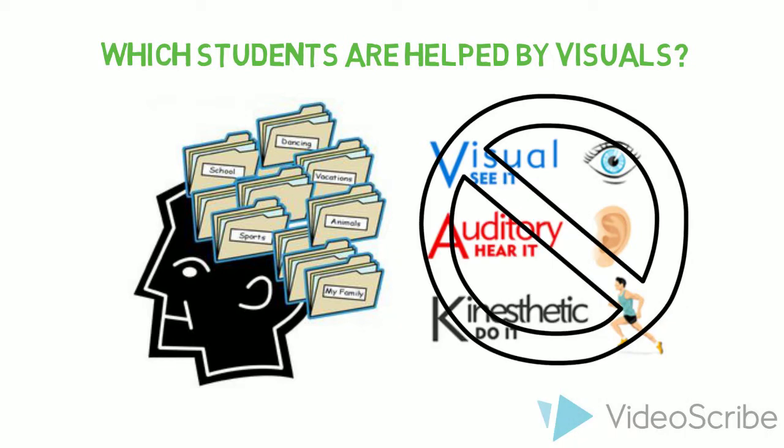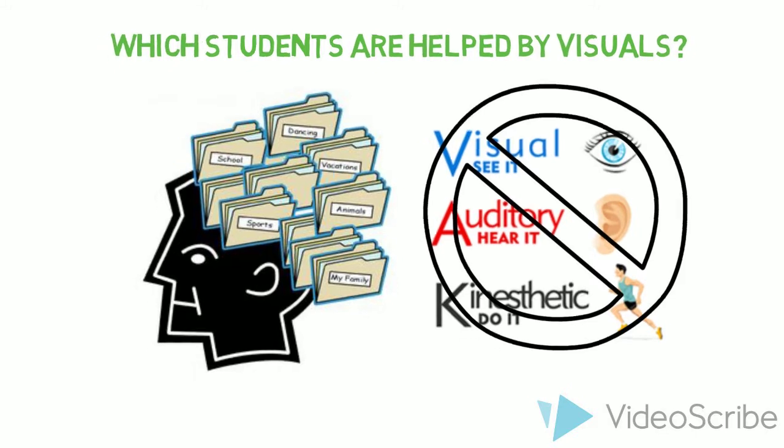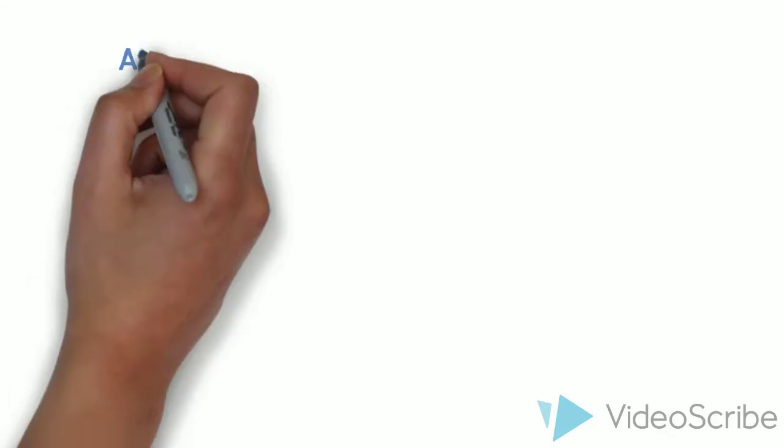This finding is corroborated by Massa and Mayer, who found that giving visual learners visual lessons gave them no advantage over giving auditory learners auditory lessons. The research often shows that the best medium for all students is visual, no matter the learning preference of the students.